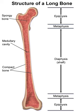Pressure epiphyses assist in transmitting the weight of the human body and are the regions of the bone that are under pressure during movement or locomotion. Another example is the head of the humerus, part of the shoulder complex. The condyles of the femur and tibia also fall under pressure epiphysis.